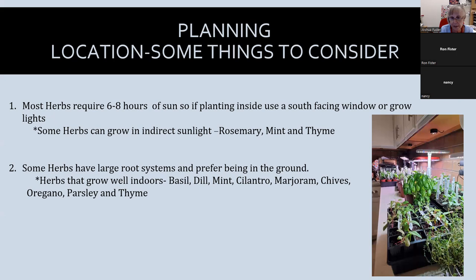Some herbs have large root systems and prefer being in the ground rather than a pot. Rosemary, for example, will do well for a couple of months inside, but then it gets root-bound and you'll need to move it to a bigger pot or put it outside. Good herbs for growing inside include basil, chives — which is great for beginners because it's forgiving with light and water requirements — oregano, and parsley.